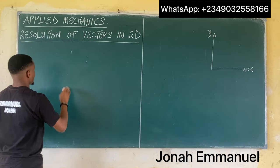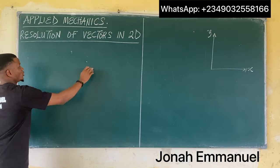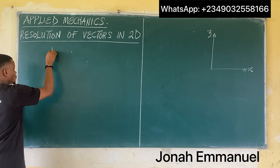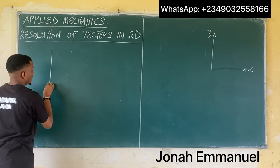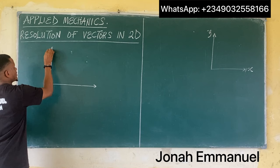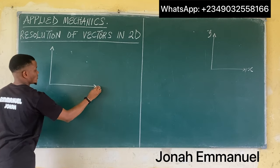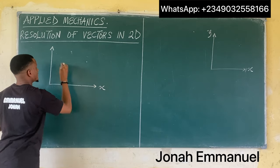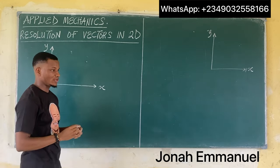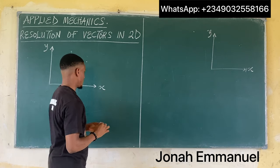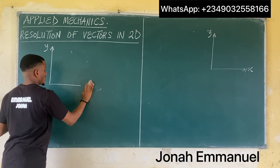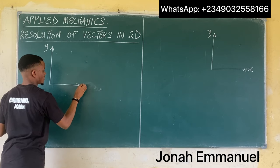For our lesson today, we will be using the vector force. So we talked about 2D as a two-dimensional coordinate system. Here's your X and here's your Y — this is my 2D system. Let's say we have a particular force acting at an angle.